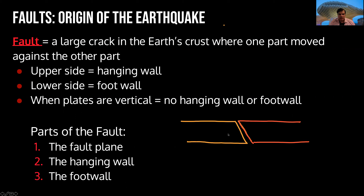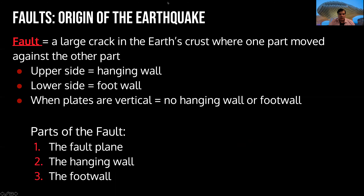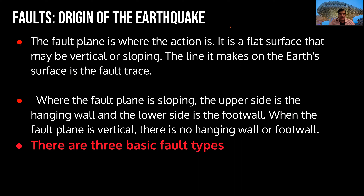Depending on how the break is made, we can say there is an upper side or a lower side. This one will be the foot wall, and this will be the wall that is hanging. When this is vertical, nothing will happen — both are in the same position. The fault plane is where the action is. It is a flat surface that may be vertical or sloped, and the line it makes on the Earth's surface is the fault trace.